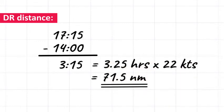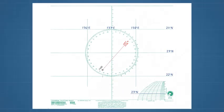This distance, about 71.5 nautical miles, is measured on the latitude scale closest to the position and marked off on the course.